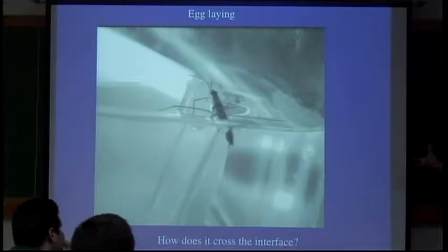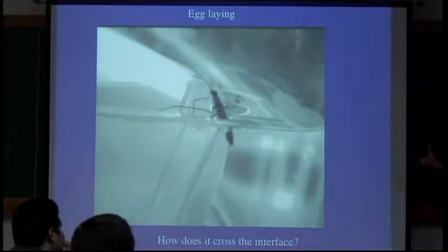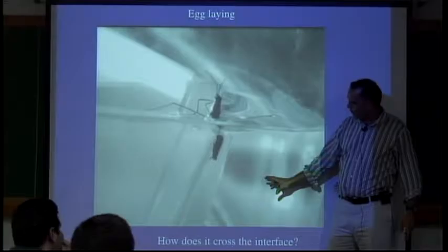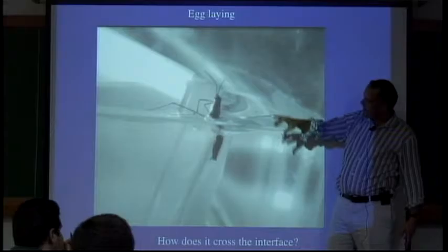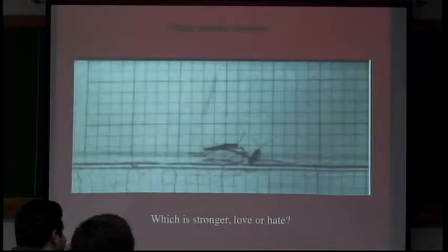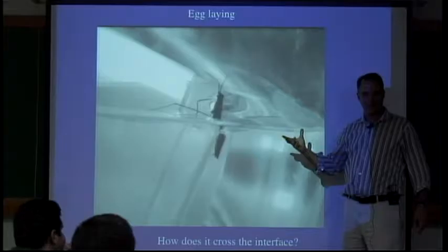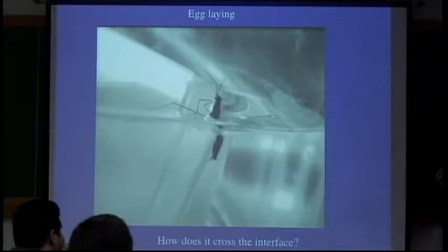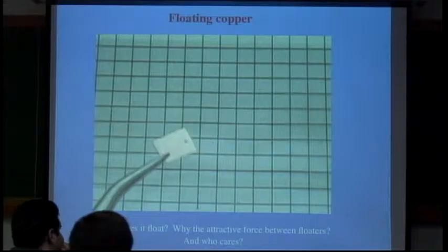They are actually born underwater in eggs, and then the infant water striders have to swim up to the surface and break through. They spend their entire life on the surface until the female has to submerge to lay eggs. To cross the interface, you have to generate a force which is a hundred times greater than your weight — so there's an enormous force on this scale. How do they do it? They actually change the chemistry, so it's a question of using surfactants.